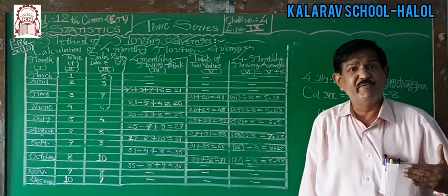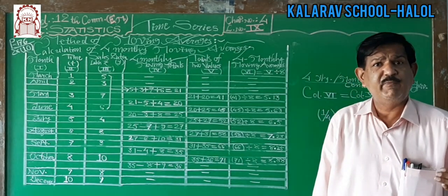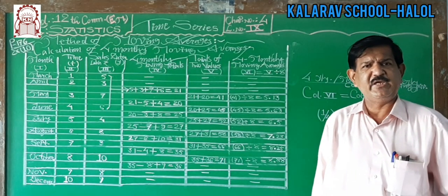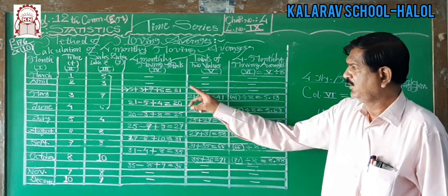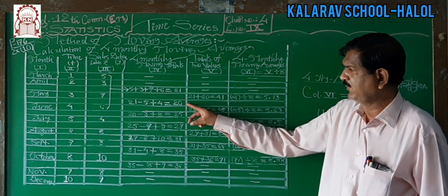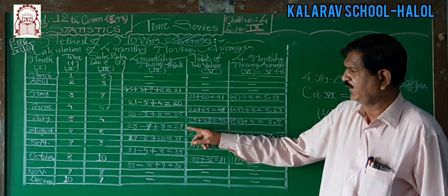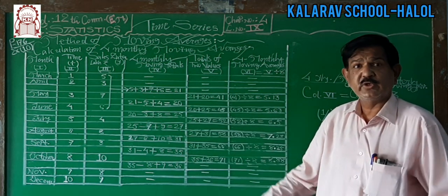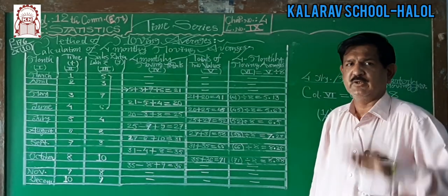These are the moving totals of 4 items — whether for sales, profit, or production, whatever is given. The values 21, 20, 25, 27 are the moving totals of the 4 items.